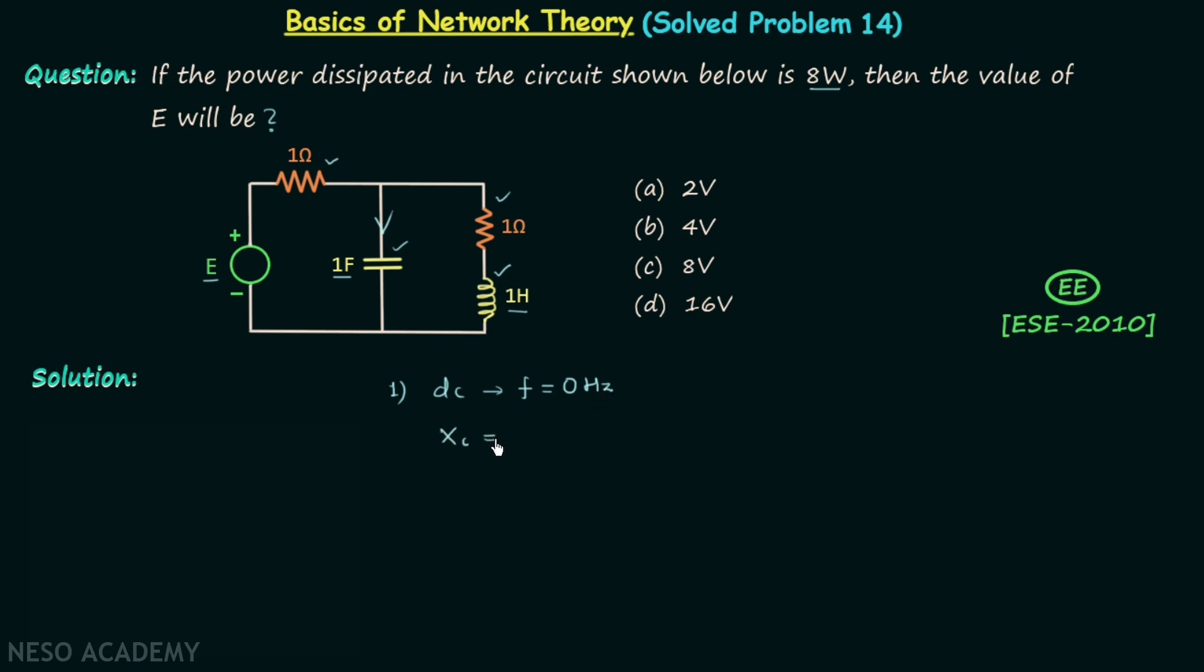The reactance offered by the capacitor is equal to 1 over 2πfc. In our case, C is equal to 1 farad, so the reactance offered X₁F equals 1 over 2π multiplied by 0 (f equals 0) multiplied by 1. So from here we are getting 1 over 0, which is infinity.